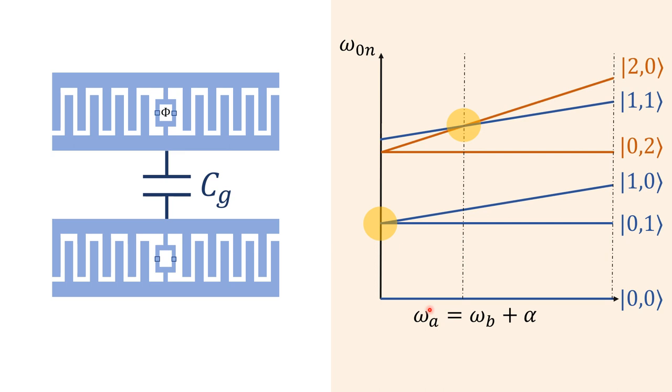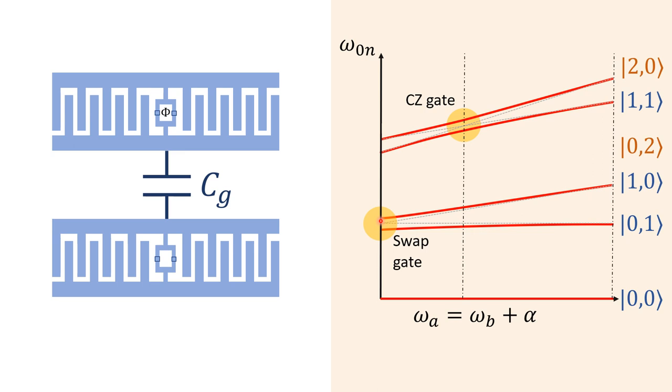As we see in this plot, as a function of the frequency of one of the qubits relative to the other one, we find different level crossings. At this point, the two qubits have the same frequency. The 0-1 and 1-0 states are degenerate and they can exchange excitations, implementing a swap gate.